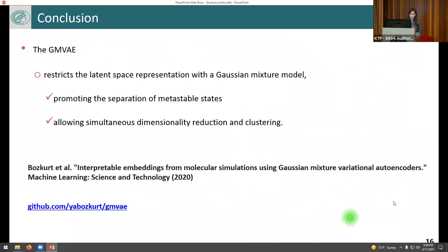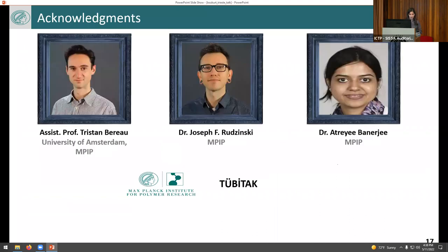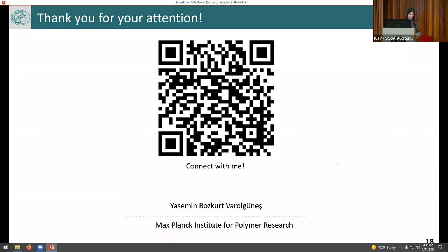So overall, I introduced a method, Gaussian mixture variational autoencoder, which helps promote the separation of metastable states for our applications at least. It does it simultaneously, dimensionality reduction and clustering. It is a generic method, so feel free to adapt to your cases as well, although I just focused on molecular dynamics data. The paper is here and also our implementation is there. I would like to thank my collaborators, Tristan Bereau and Joseph Rudzinski, and Atreyi Banerjee from Max Planck Institute for Polymer Research. Thank you for your attention, and I'm happy to take questions.